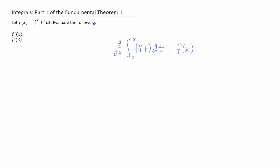We're going to use part one of the fundamental theorem of calculus to solve this problem. We're given a function, and that function is an integral from negative one to x of t to the 7th dt.